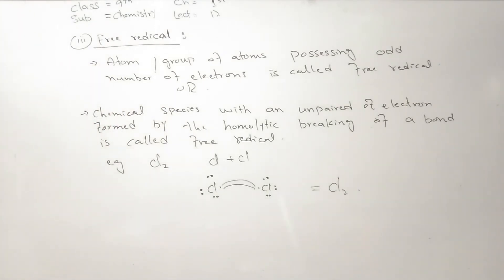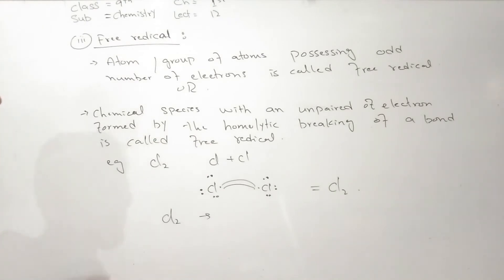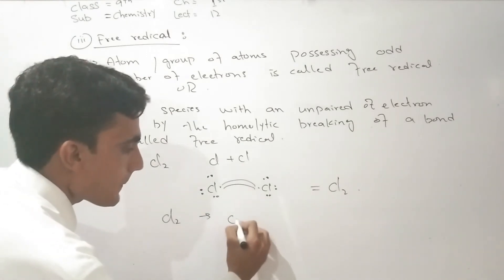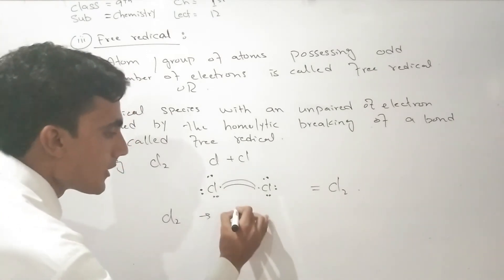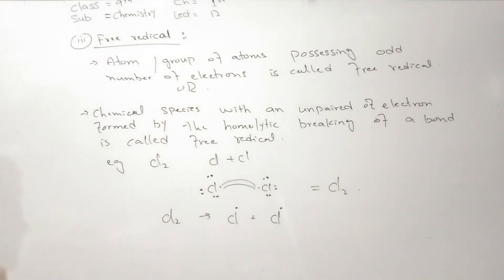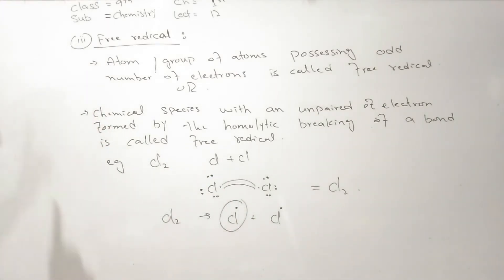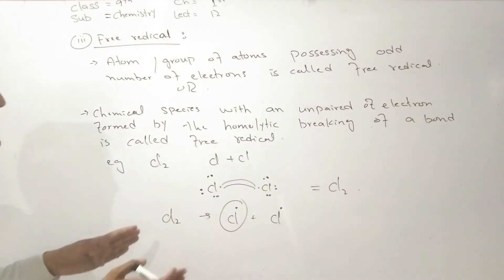Mutual sharing forms a covalent bond. The equivalent bond will be formed. Due to sunlight or light, if the Cl2 bond is broken, each of the two electrons is distributed — one to each Cl atom. Then the electron becomes a dot, representing a free radical species formed by homolytic breaking.